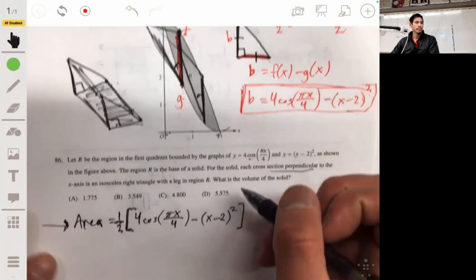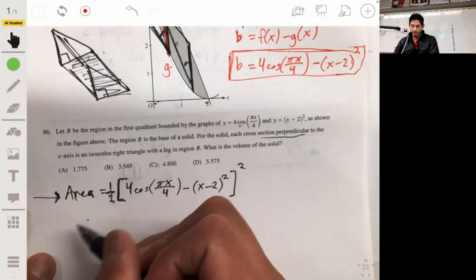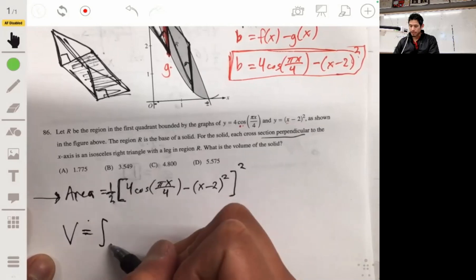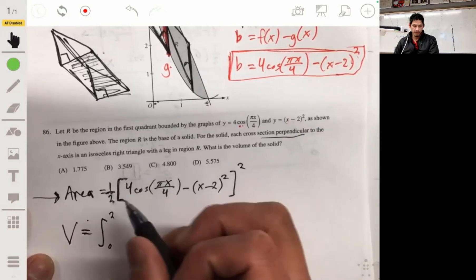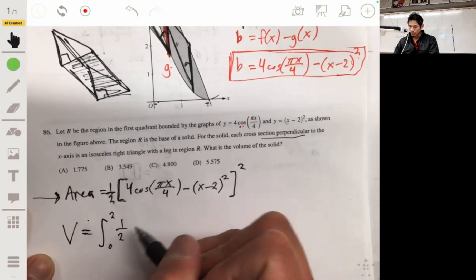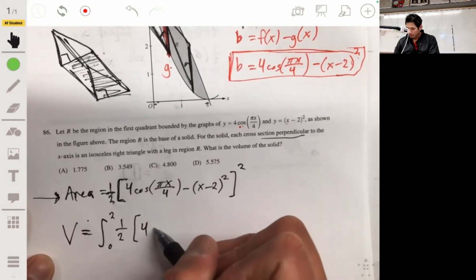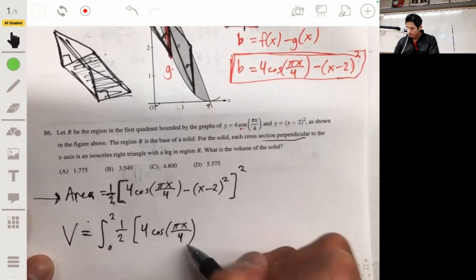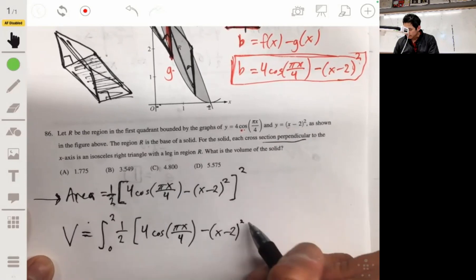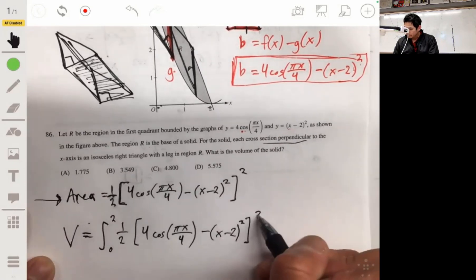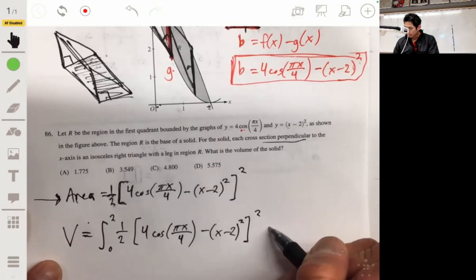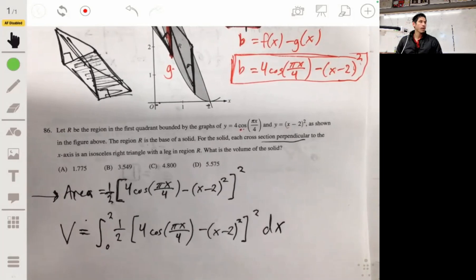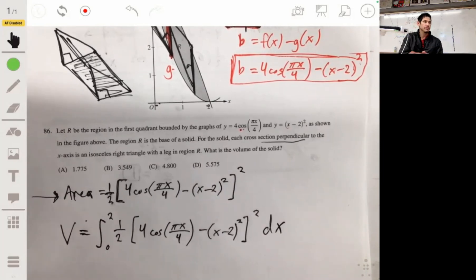Which will be the integral from 0 to 2 of one half times [4 cosine pi x over 4 minus (x minus 2) squared] squared, the whole thing integrated. And for this, just use a graphing calculator, use the technology. We don't want to mess up.